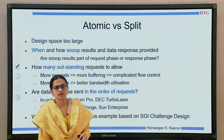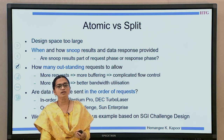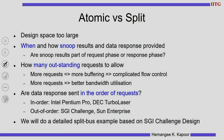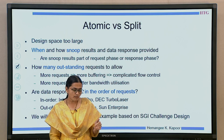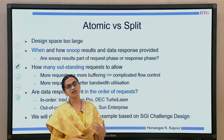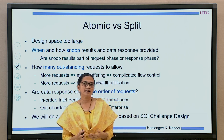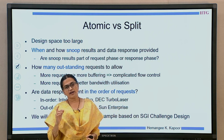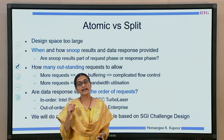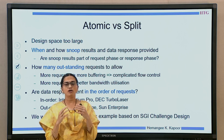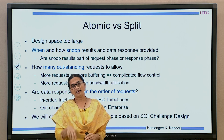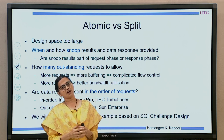Now what is the design space for this — what are the options I need to take into account? One is about snoop results: when should I send them, during the request or the response? Second is how many requests can I keep outstanding. In the restaurant example, how many customer requests should the service person take at once? It depends on your processing capacity. The more requests you can handle, the more bandwidth utilization occurs, but the more buffering is required and the more flow control issues arise.